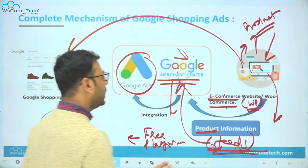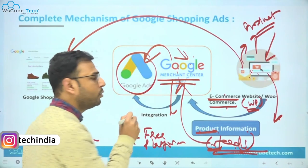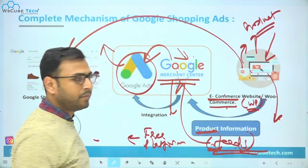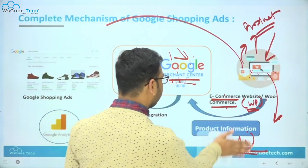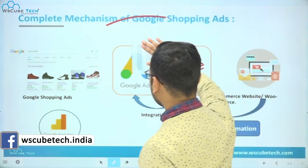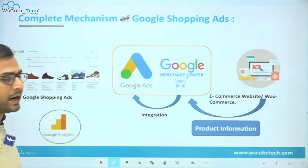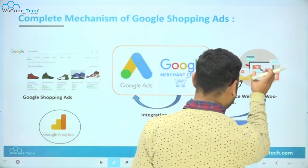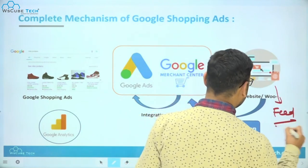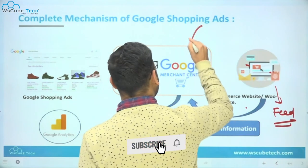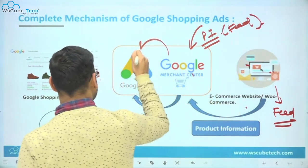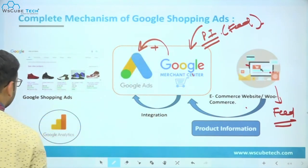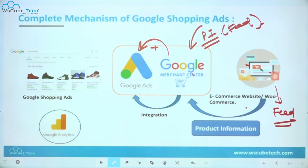Once your product feed is ready, you connect your Google Merchant Center with your Google Ads account and run your ads from the Google Ads platform. Many people get confused thinking you just put the link of each product directly into Google Ads — that is not how it works. You bring the product information as a feed from your website, upload it to Google Merchant Center, connect Merchant Center to Google Ads, and then run your shopping ads.